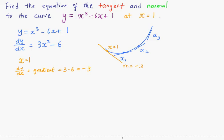When x = 1, y = -4. So this point has the coordinates (1, -4).